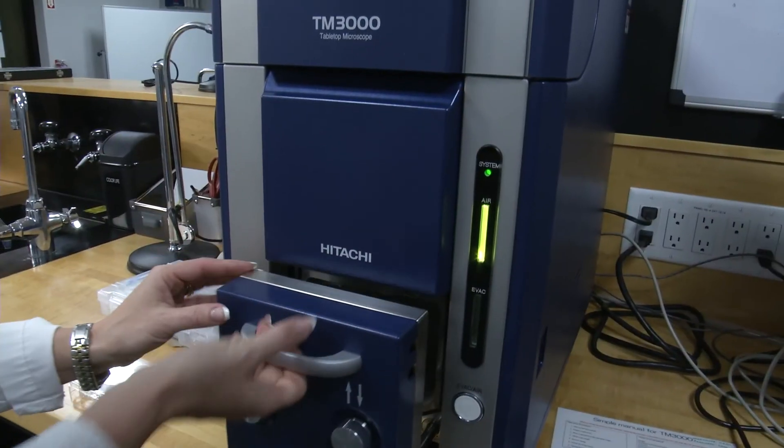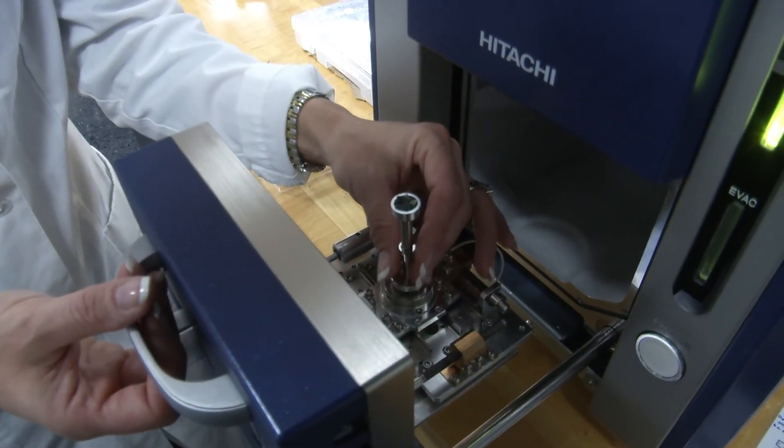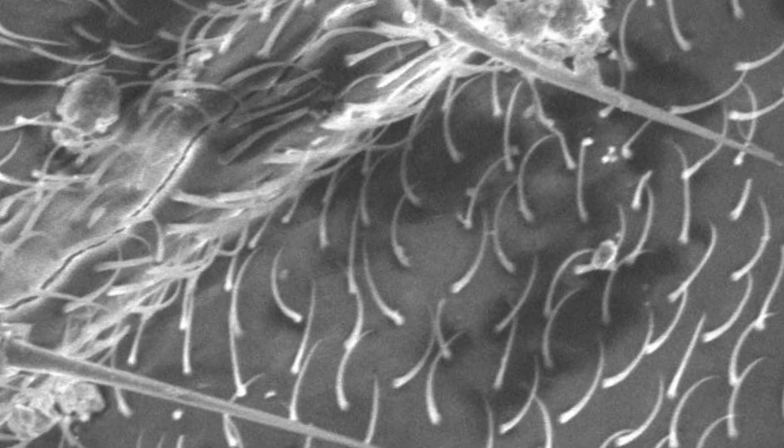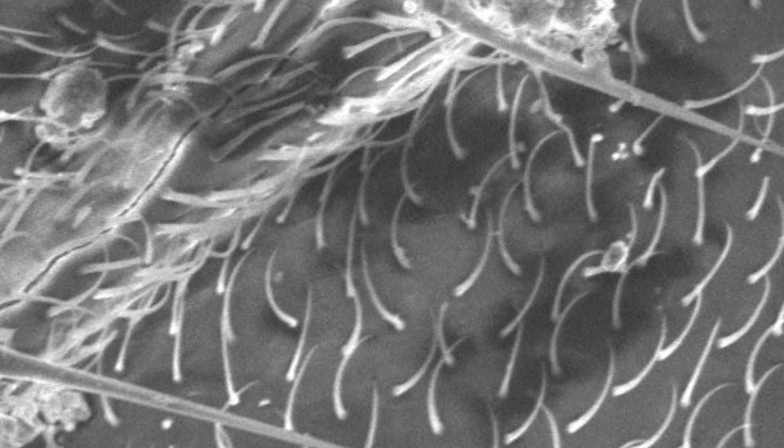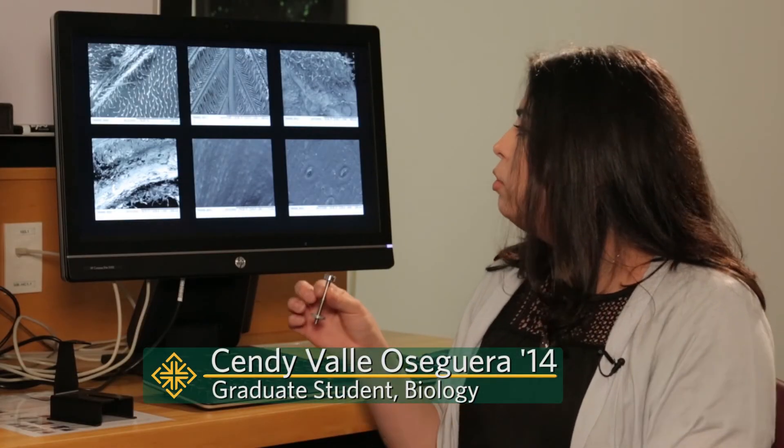This is a scanning electron microscope. It's a powerful tool which we can use to picture some really small structures. For example, we're here looking at various parts of an insect, the wings, parts of a leaf, and it allows us to look at those very close details and examine them.